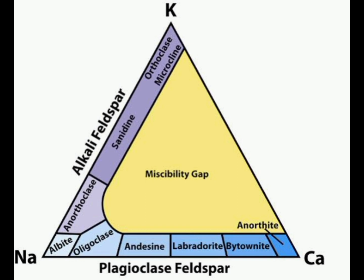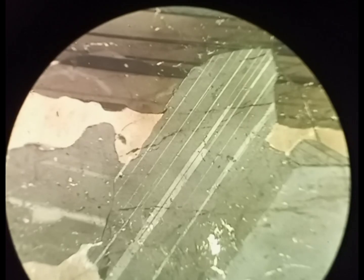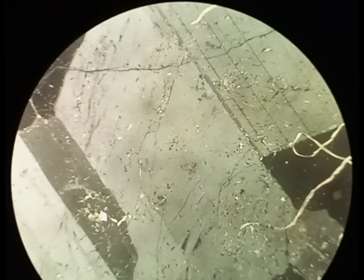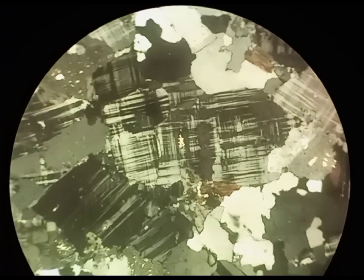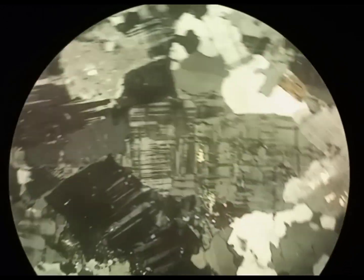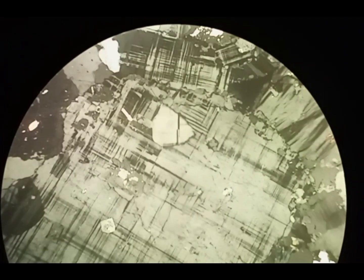As you can see in this diagram, we can identify and differentiate these types of feldspar on the basis of different kinds of twinning. Here you can see this is microcline, in which you can see cross-hatch twinning, also known as tartan twinning.